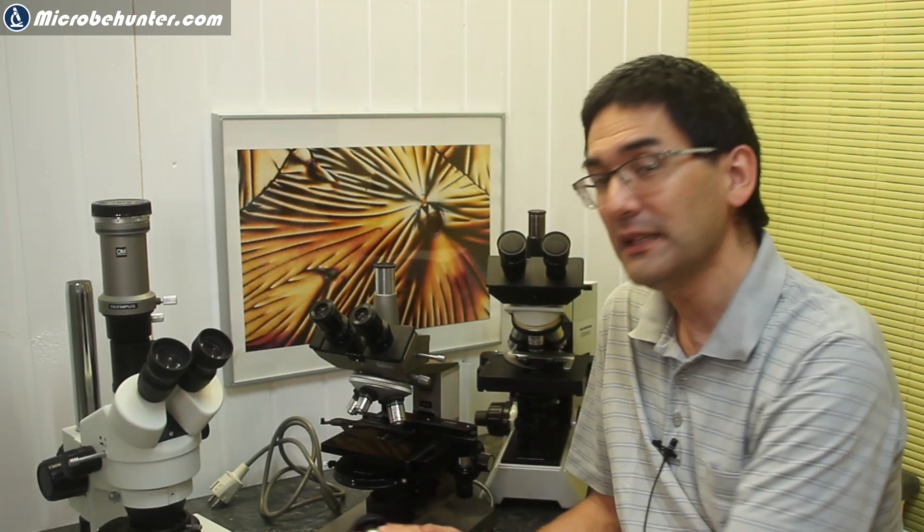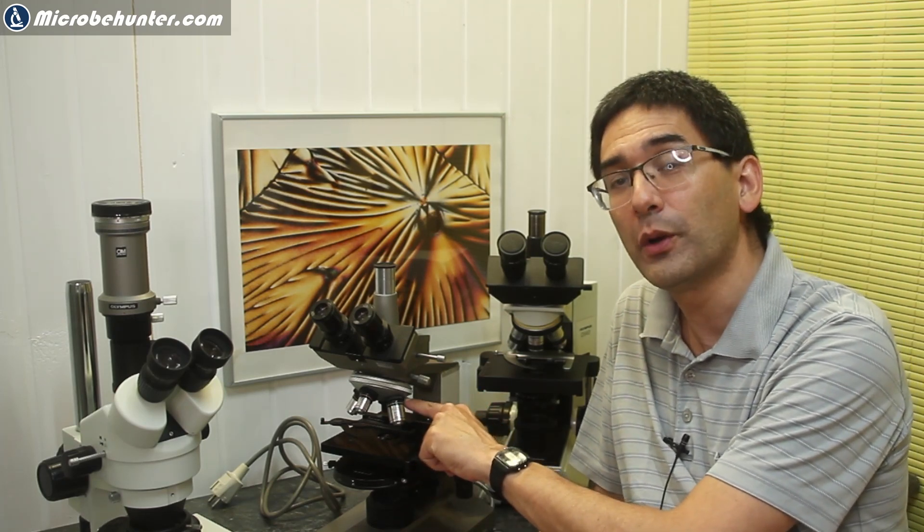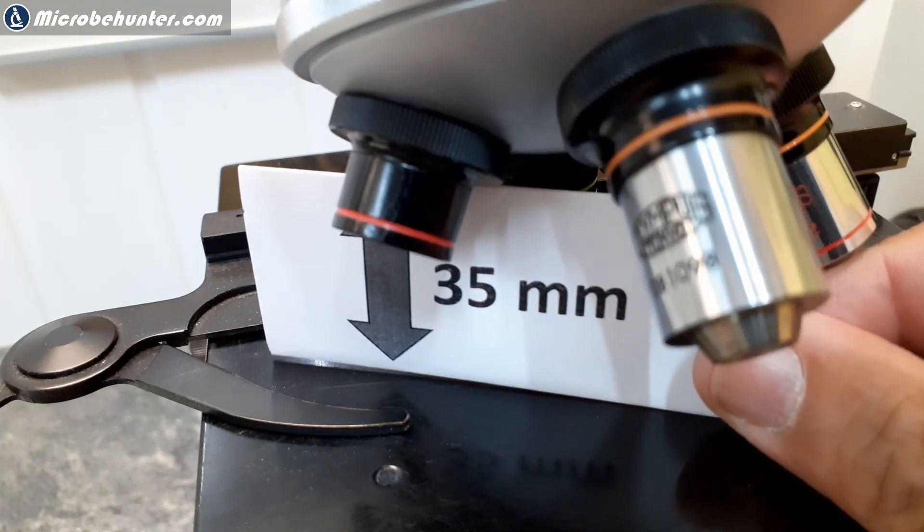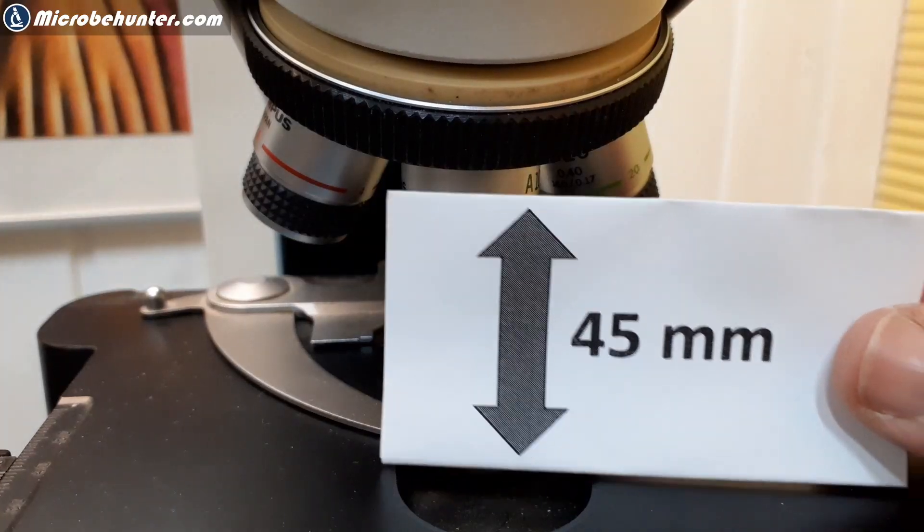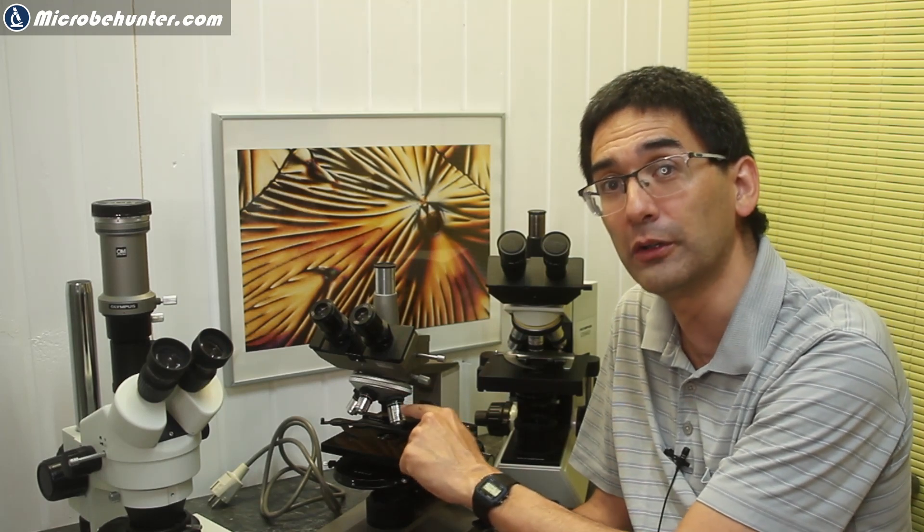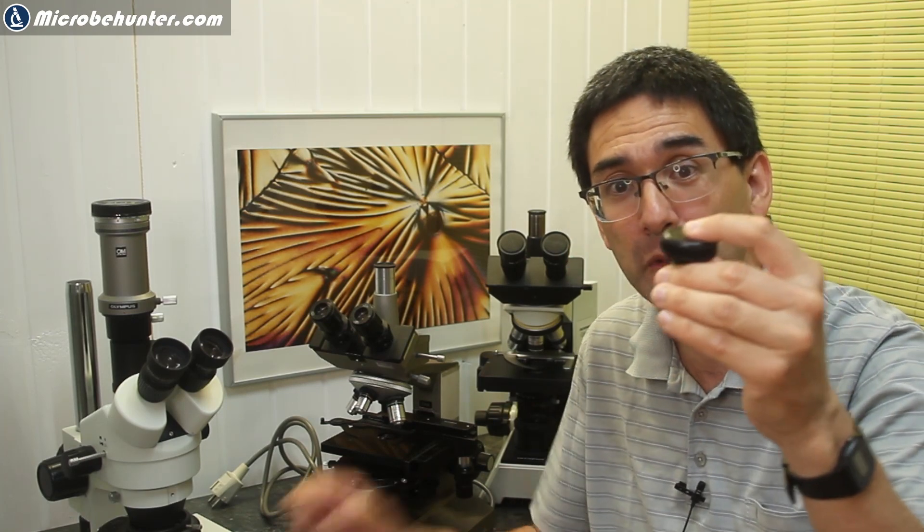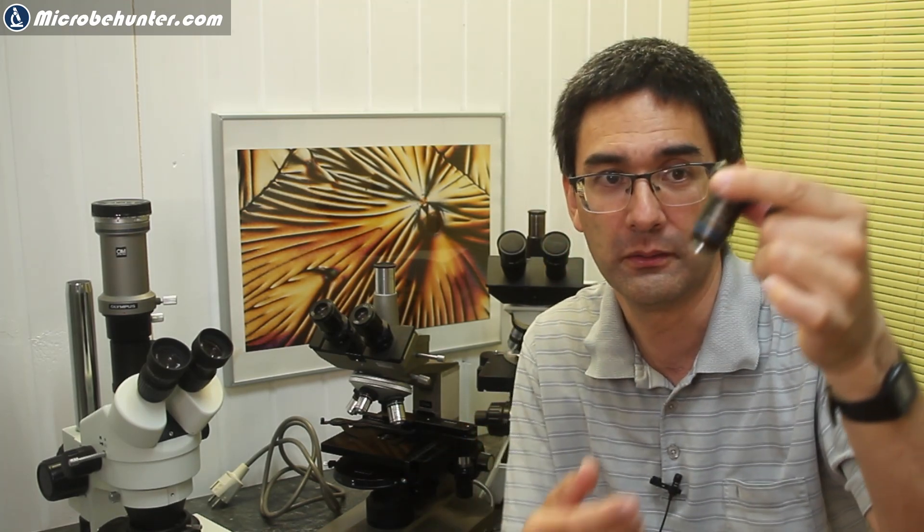This means that the distance from the stage to the place where the objective is mounted at the revolving nosepiece is 35 mm here, and over here it is 45 mm. So the distance between stage and the place where the objective is mounted is smaller here. This is also why the objective can be smaller. Some people call them short barrel objectives. And this one is a long barrel one, a normal one.